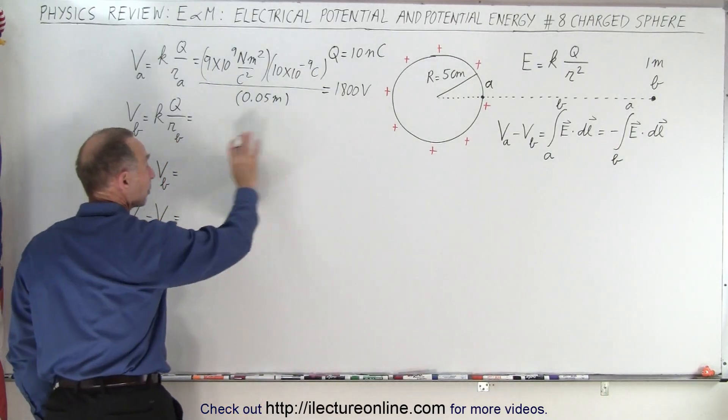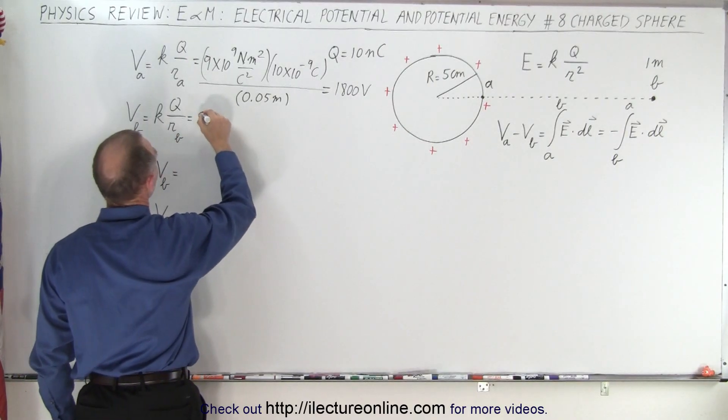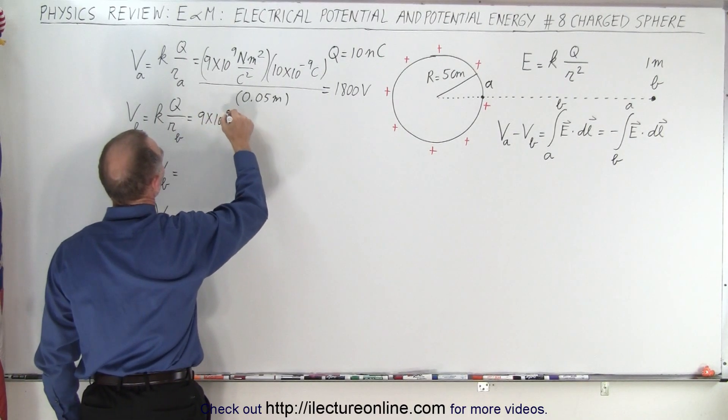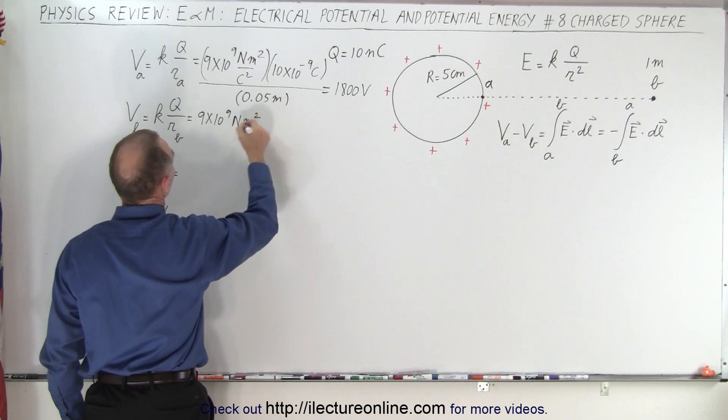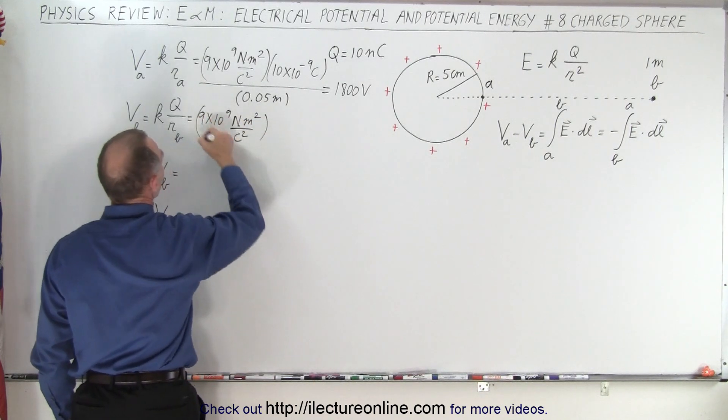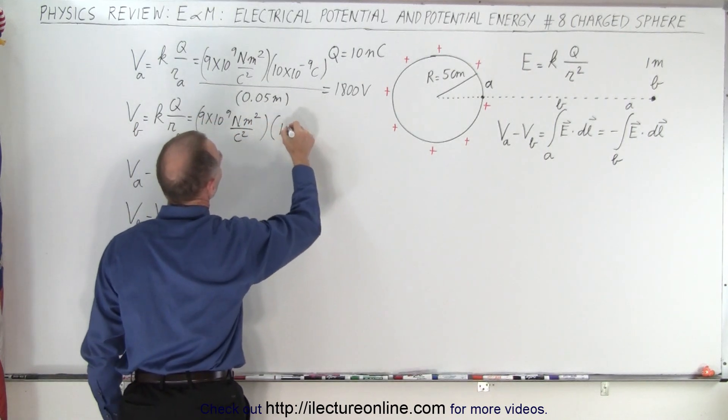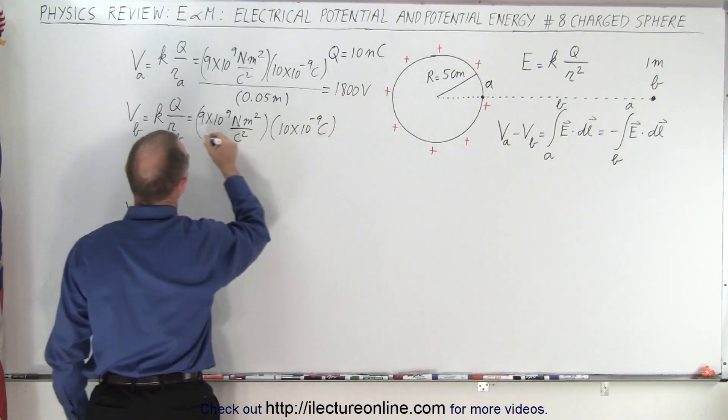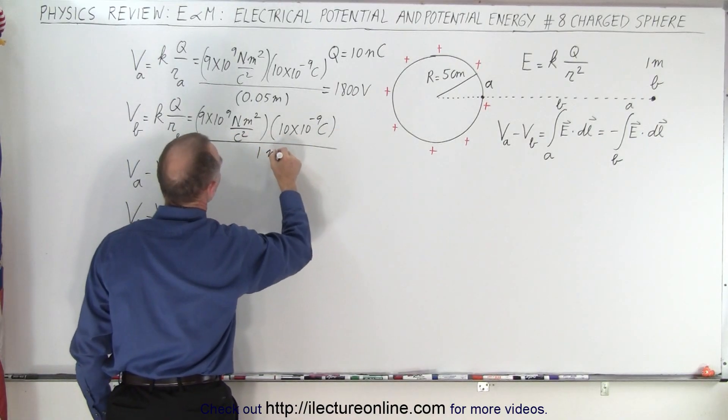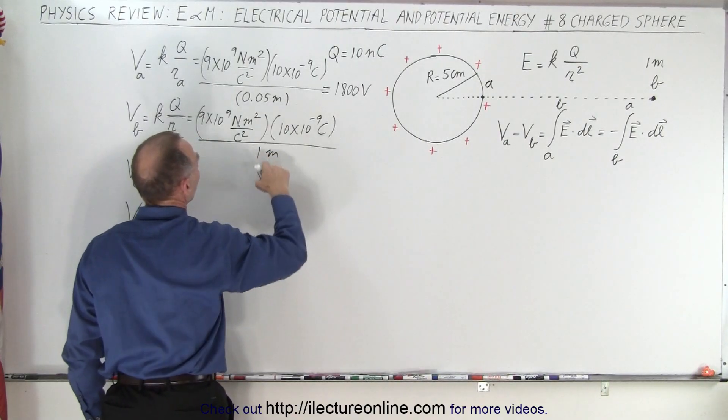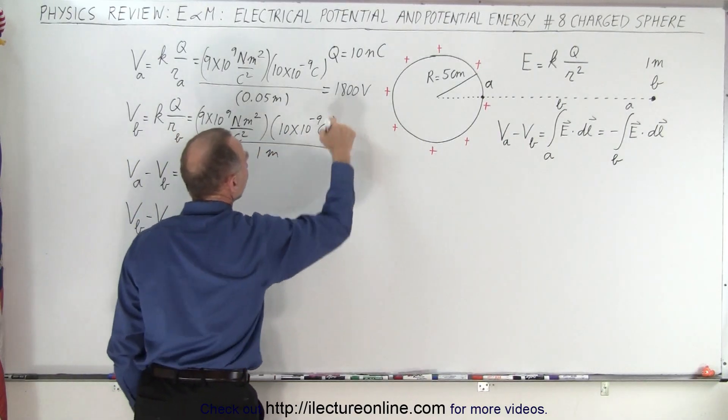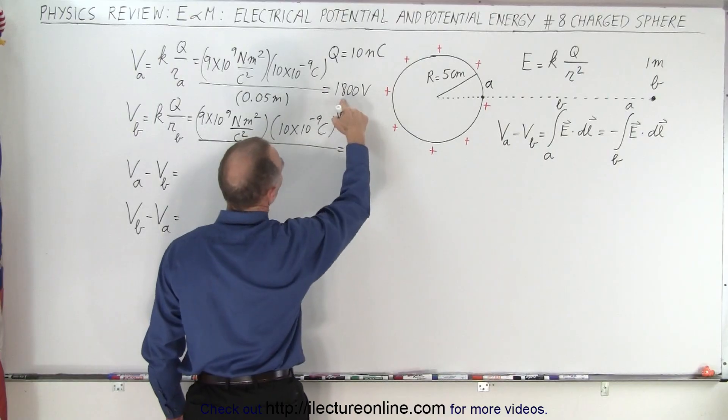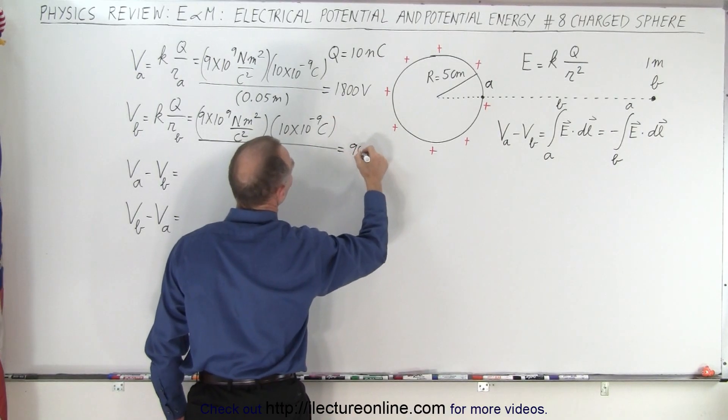Alright, now we do it again for point B, which is 1 meter away, so this is 9 times 10 to the 9th newtons meters squared per coulomb squared, multiply that times 10 times 10 to the minus 9 coulombs, and the whole thing divided by 1 meter. So 1 meter now, that is 20 times as big, so that will be 20 times as small, so divided by 2 is 900, that would be 90 volts.